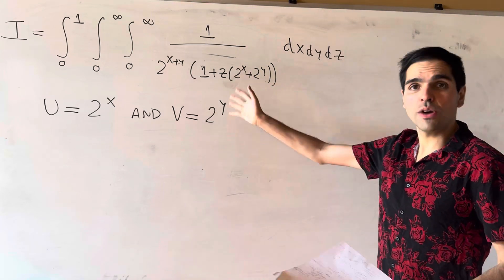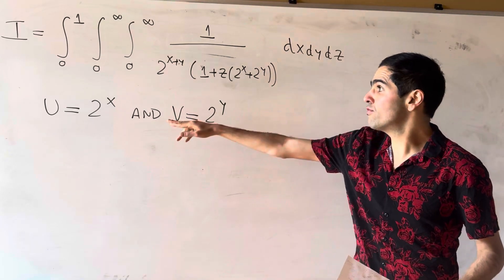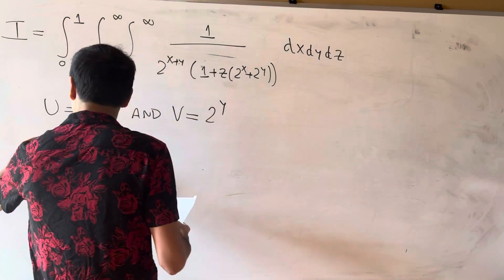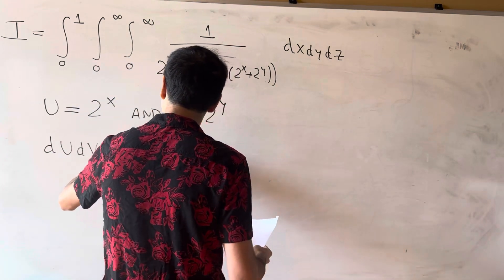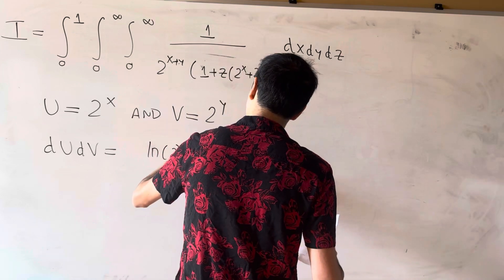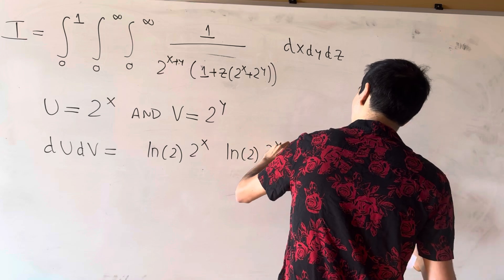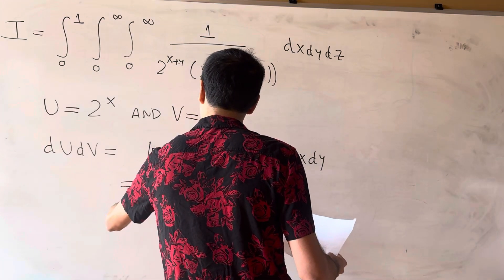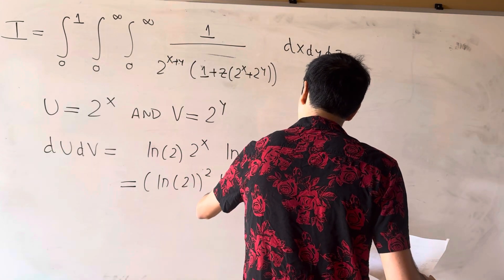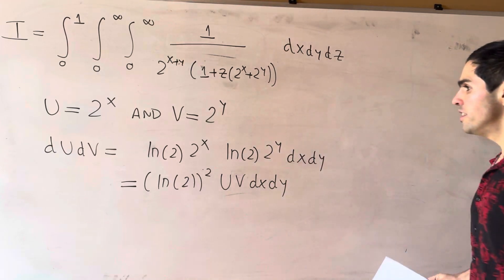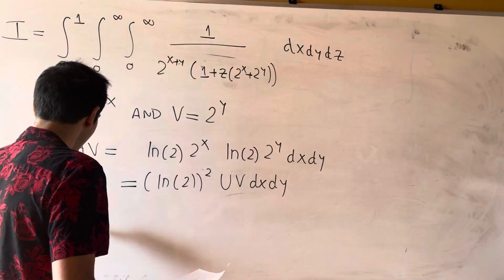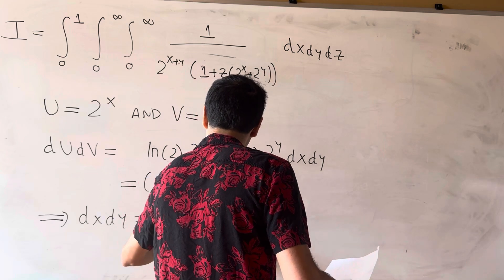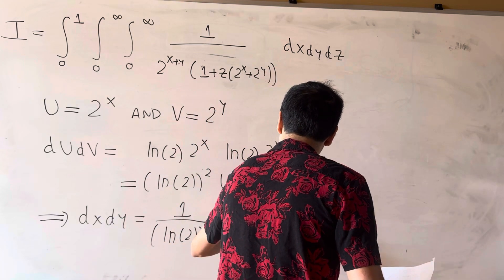Technically we need a Jacobian, but since we have something with x and something with y separately, we can do it directly. So du dv = ln(2)·2^x · ln(2)·2^y dx dy, which is ln(2)² · uv · dx dy. So dx dy = (1 / ln(2)²) · (1/uv) du dv.